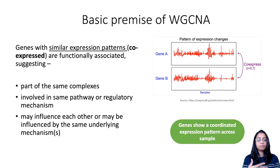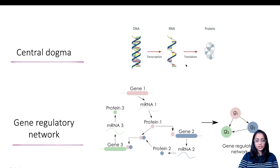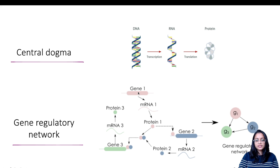Functionally associated means they are part of the same complex, involved in the same pathway or regulatory mechanism, or they may influence each other or be influenced by the same underlying mechanism. As a quick recap on the central dogma: DNA is transcribed into RNA and RNA is translated into protein. Here is a gene regulatory network where gene 1 gets transcribed into mRNA1, which is translated into protein 1.